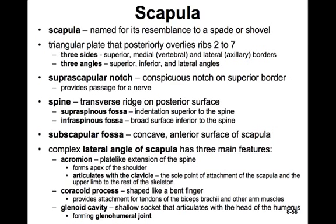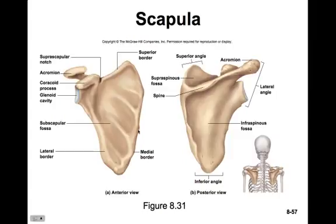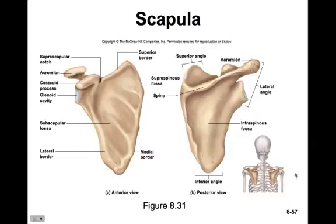The scapula is named for its resemblance to a shovel or spade. It's a triangular plate that overlies ribs two to seven. It has three sides and three angles. We have the medial border towards the middle of the back, the lateral border on the lateral side, and the superior border on the top. The three angles are the inferior angle at the bottom, the superior angle on the medial corner, and the lateral angle where the upper arm articulates with the shoulder blade.